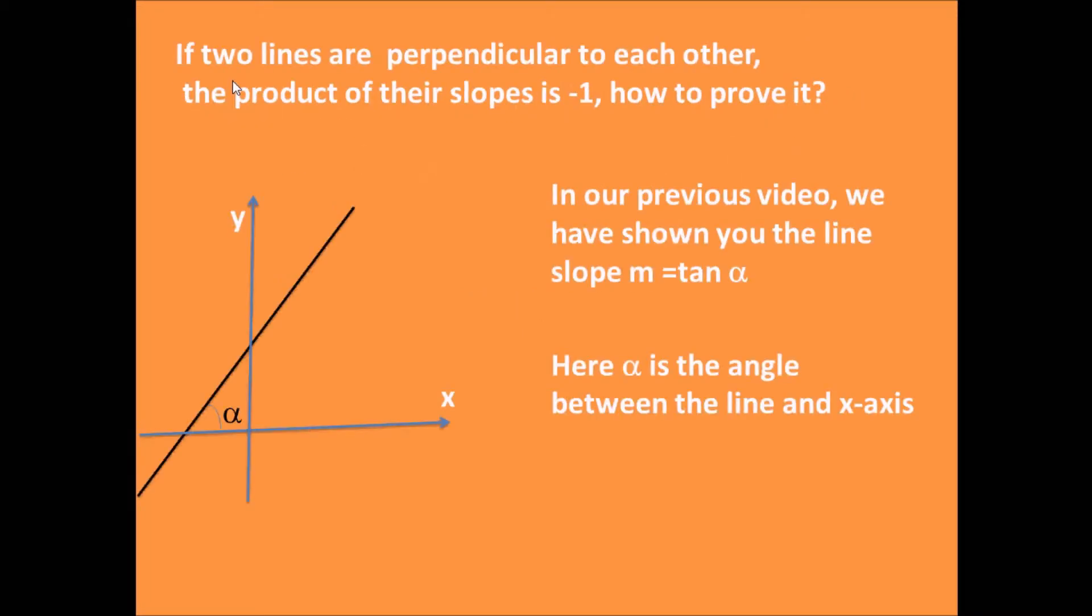In our previous video, we have shown you that the line slope m equals tangent α. Here α is the angle between the line and x-axis.